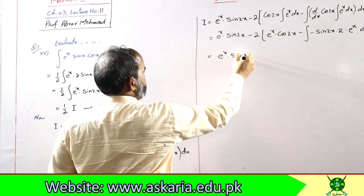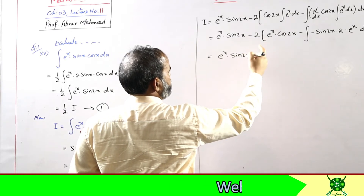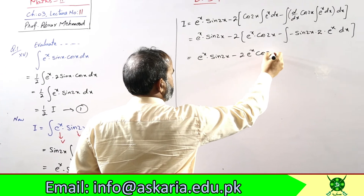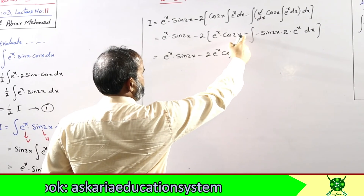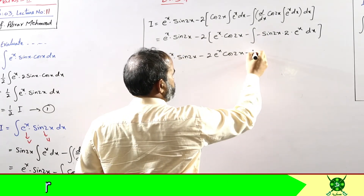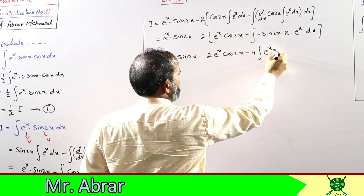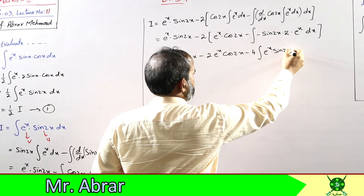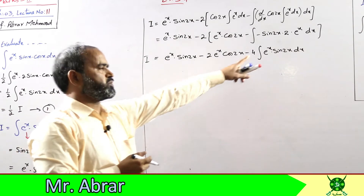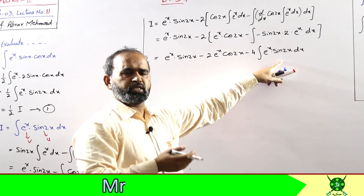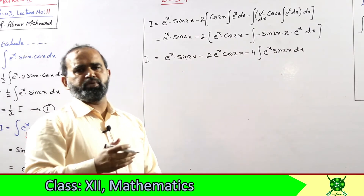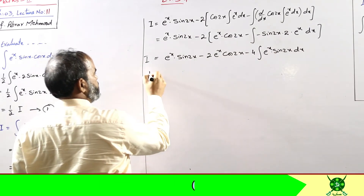Ab dobaara formula use nahi karna kyunki doosri baar formula use ho chuka hai. Kholein: two times e^x cos(2x) — ek minus hai aur ek minus hai, minus minus plus. Lekin baahir wala sign minus hai, to minus two to the four times integral e^x sin(2x) dx. Yaad rakhna: jo function repeat hoga — yaani jo dobaara banega — woh hamesha minus time banega, plus time nahi banega.